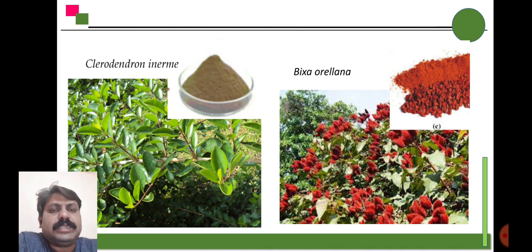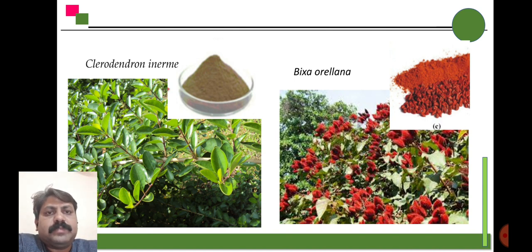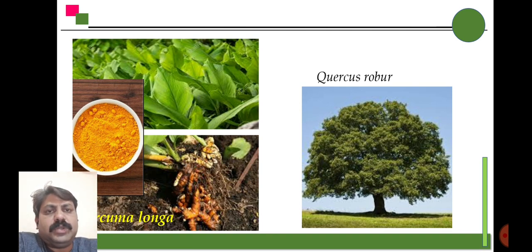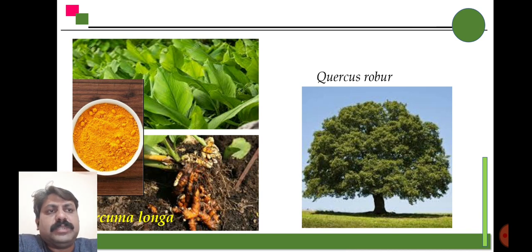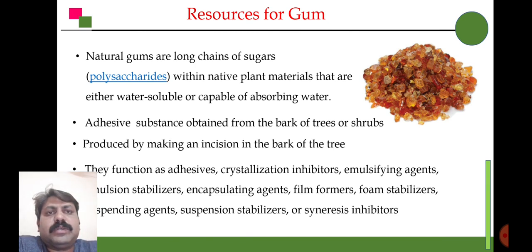Lawsonia inermis — Heena or Mehendi in Marathi — is extracted from plants. Bixa orellana is one more species from which we can extract the color called Shendur in Marathi. Curcuma longa — Haldi in Marathi — gives yellow color. Crocus sativus is one more species. These are some of the species which are sources of dyes.